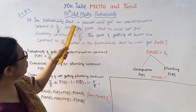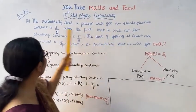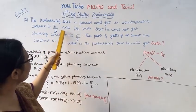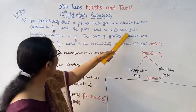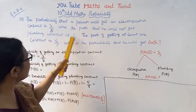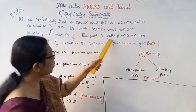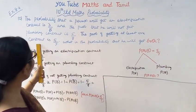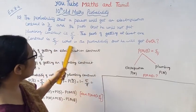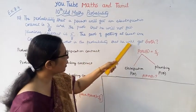The probability that a person will get an electrification contract is 3/5, and the probability that he will not get plumbing contract is 5/8. The probability of getting at least one contract is 5/7. What is the probability that he will get both?